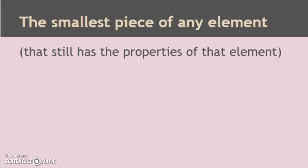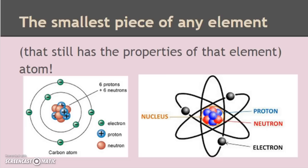The smallest piece of any element that still has the properties of that element — if I have a piece of gold, I can keep cutting it smaller and smaller until I get to the atom. The atom is made of different parts called subatomic particles: protons, neutrons, and electrons. All electrons across the universe are exactly the same, all protons are the same, all neutrons are the same. It's only when they combine into an actual atom that they have the properties of that element.